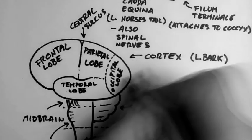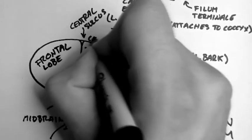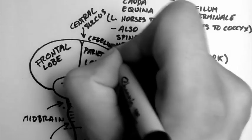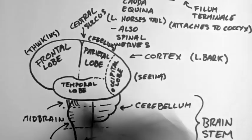Now very roughly, the occipital lobe is for seeing. The parietal lobe is for feeling. The frontal lobe is for thinking. And the temporal lobe is for hearing.